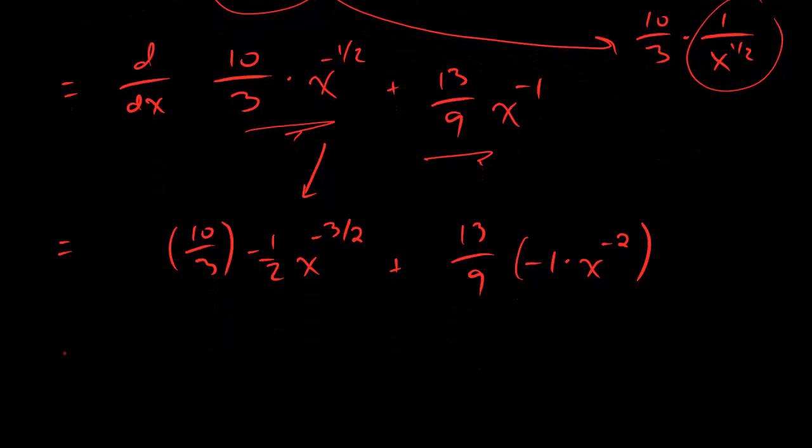Alright. Now, let's simplify that. Ten-thirds times minus one half becomes minus ten over six. And we have x to the minus three halves. Plus. And then, thirteen over nine times a minus one is just a minus. So, let's actually make that minus. Minus thirteen over nine times x to the negative two.